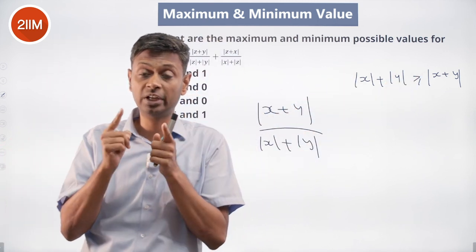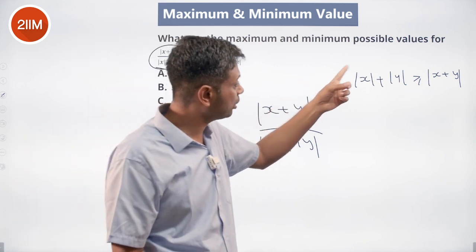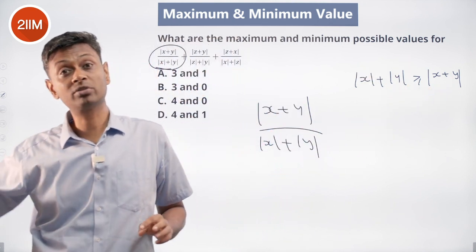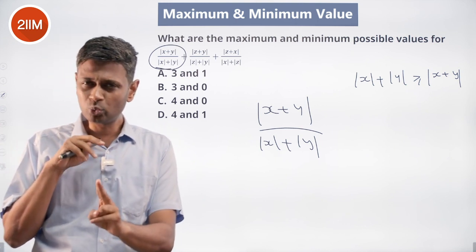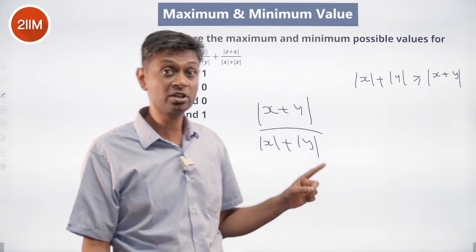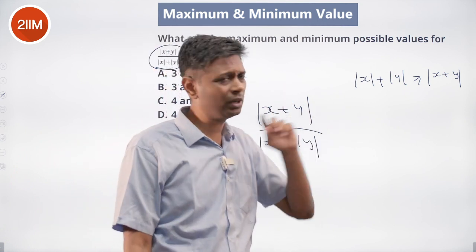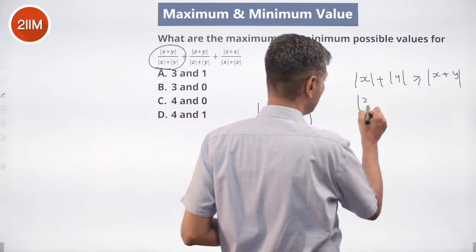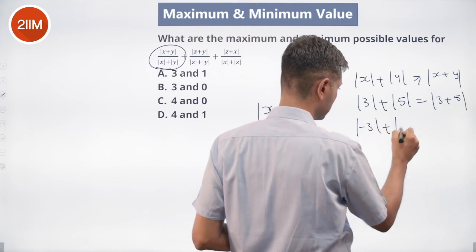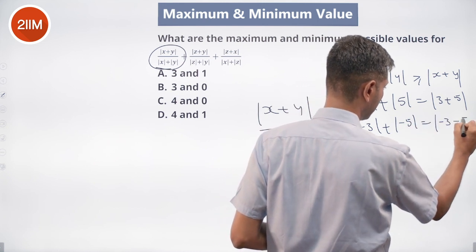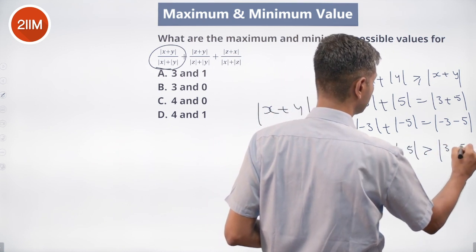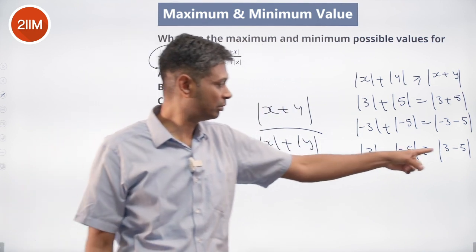We can sense straight away that mod x plus mod y is greater than or equal to modulus of x plus y. If one number is positive and the other is negative, the magnitude will shrink. For example, mod 5 plus mod 3 equals modulus of 5 plus 3, but mod 5 plus mod of minus 3 is greater than modulus of 5 minus 3, because when x and y have opposite signs their magnitudes partly cancel each other.